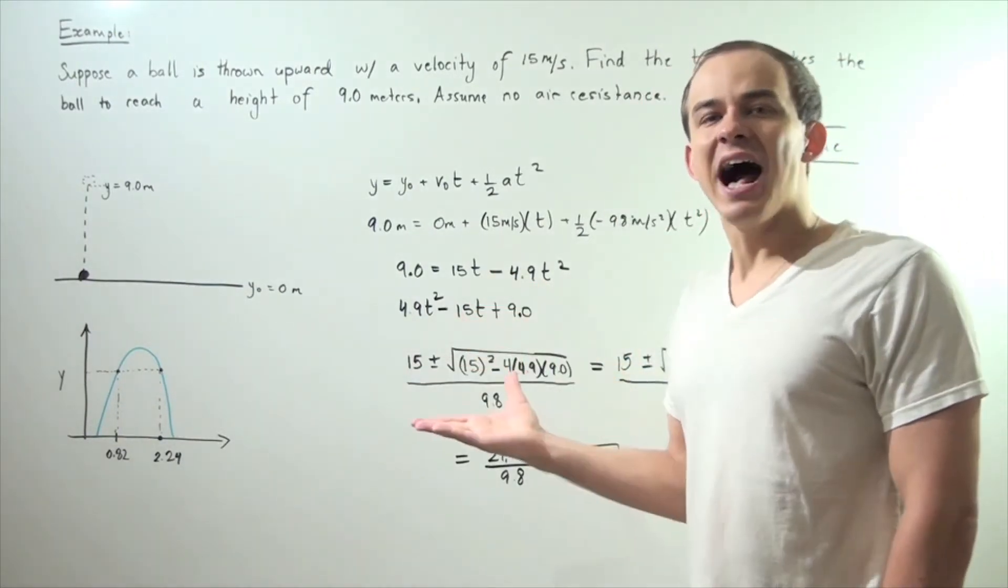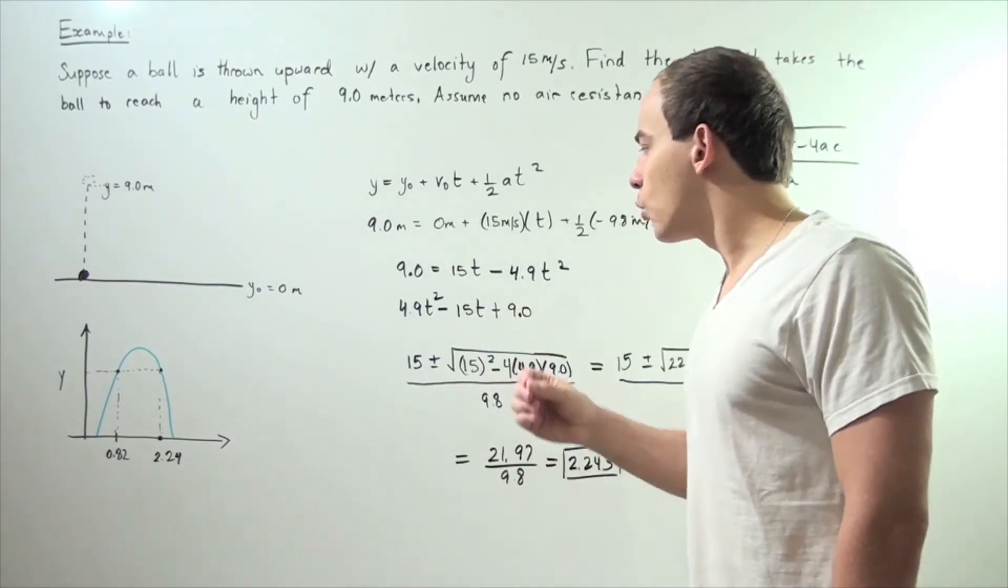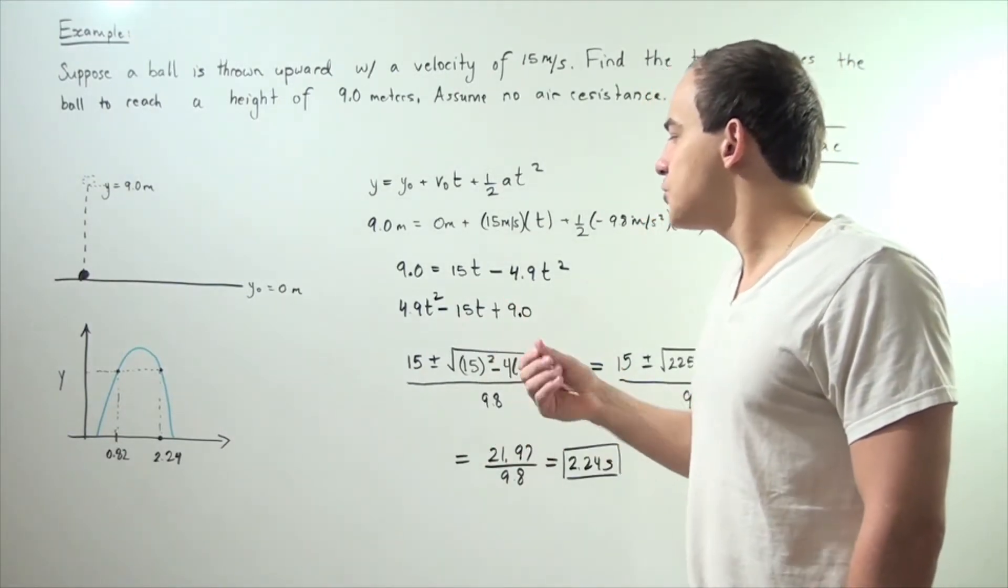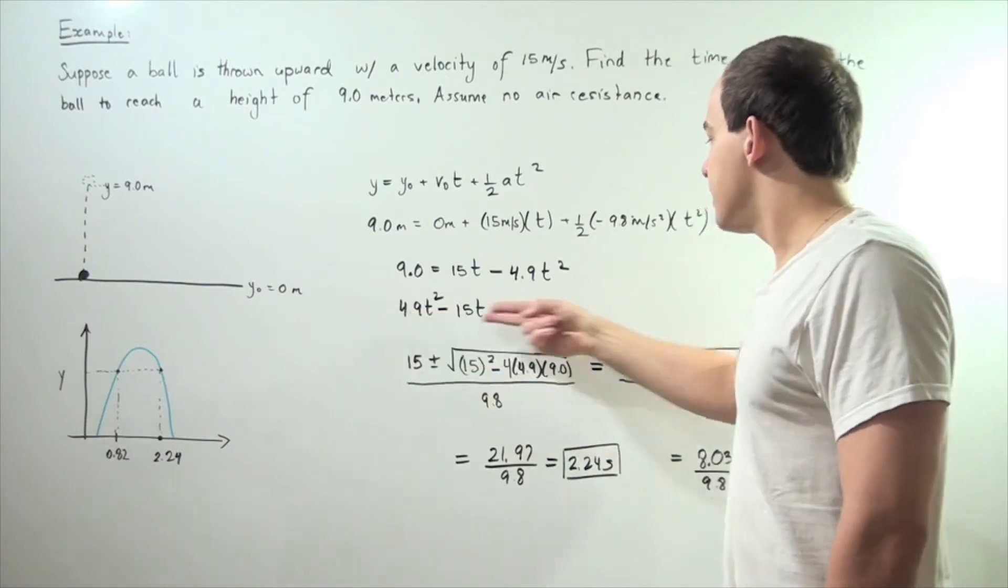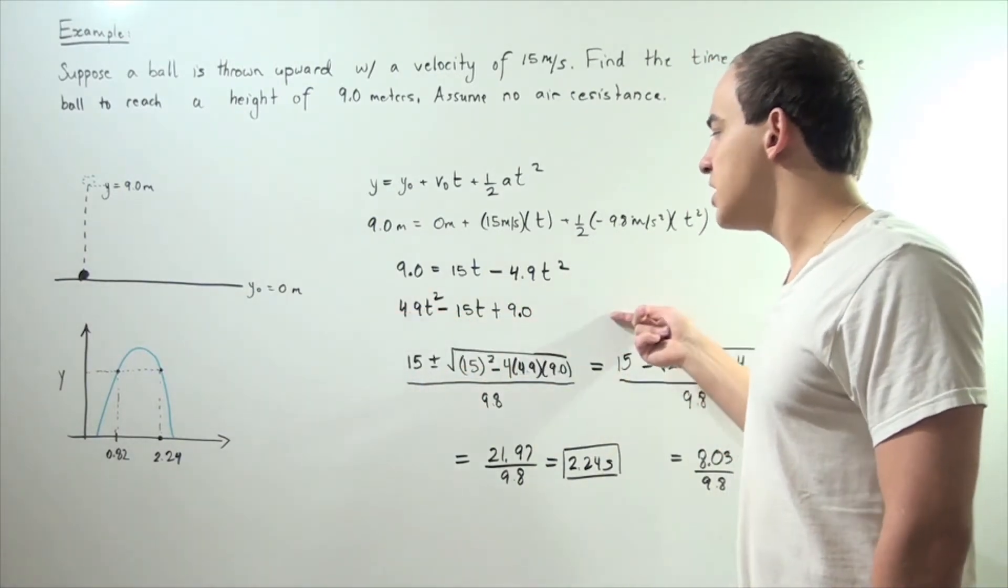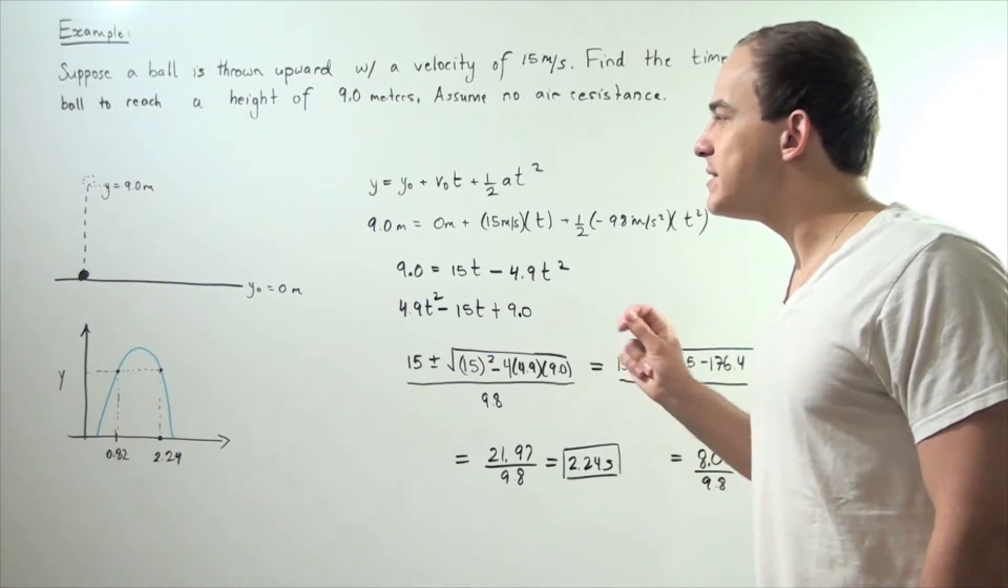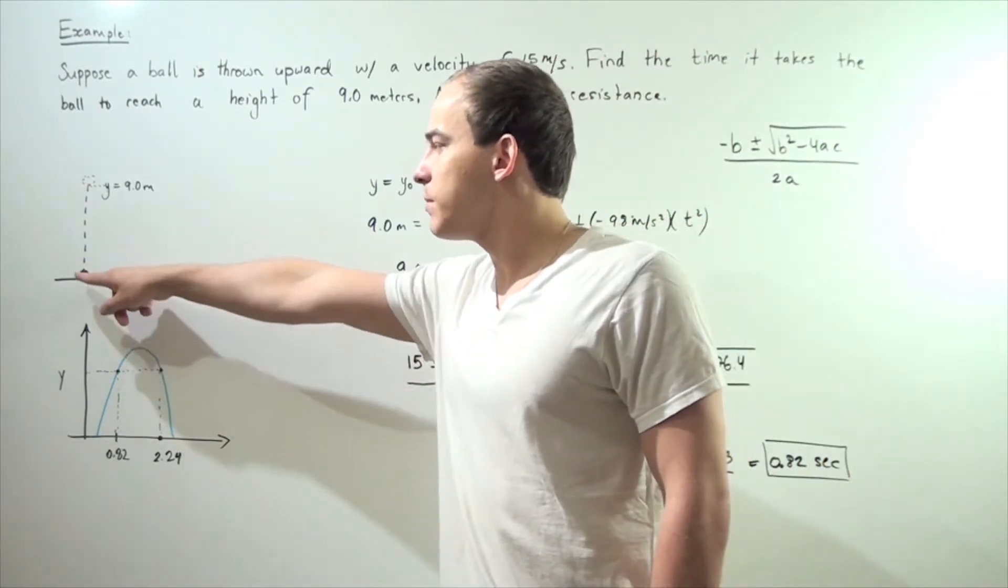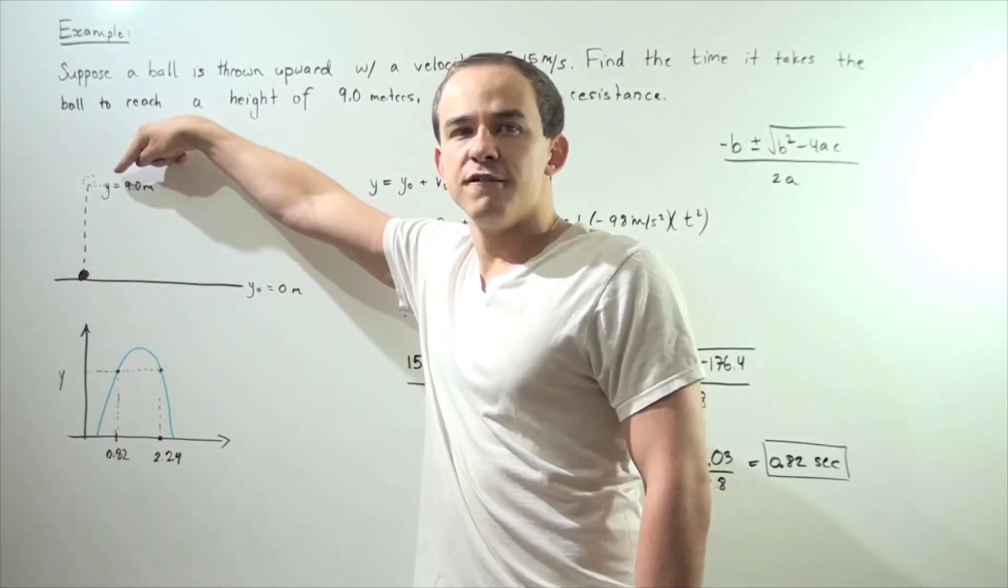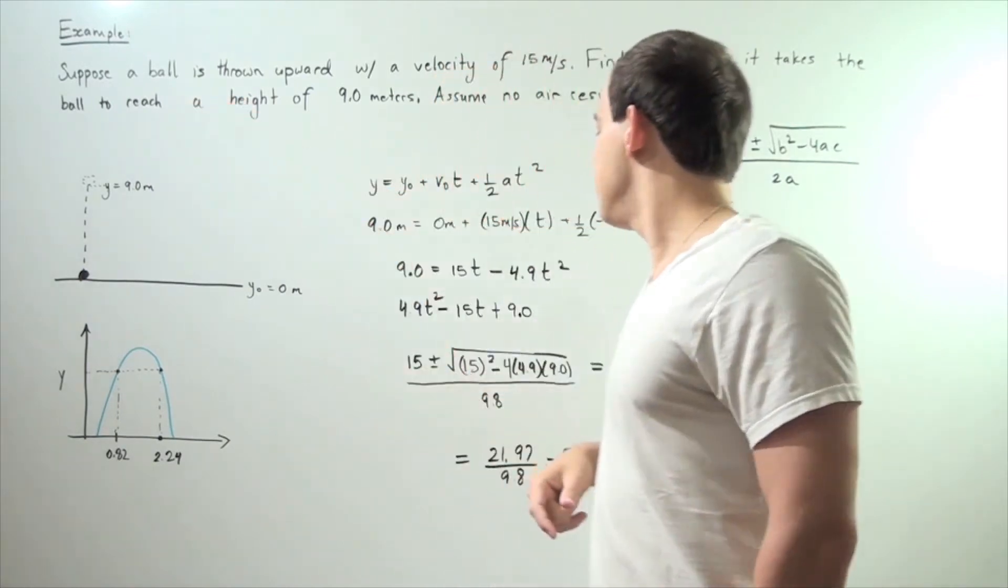We want to solve for t. In other words, we want to plug a t such that when I plug the t in, the entire equation equals zero. That time is the time it takes the ball to go from the ground to our final height of 9 meters.